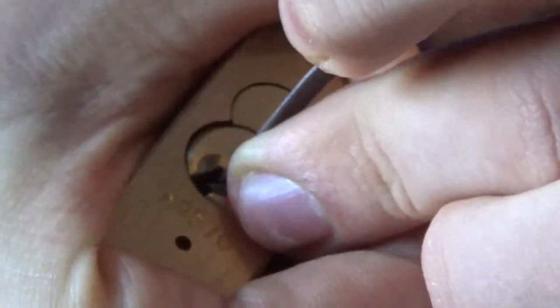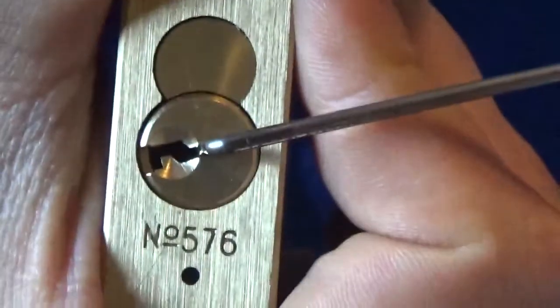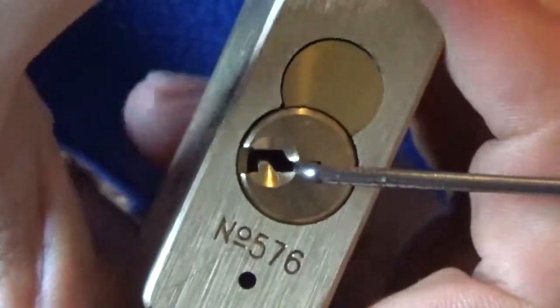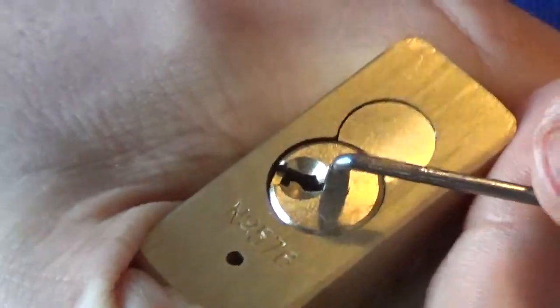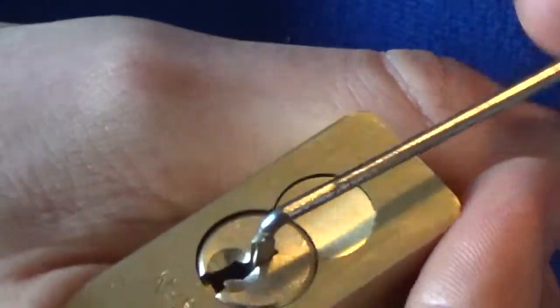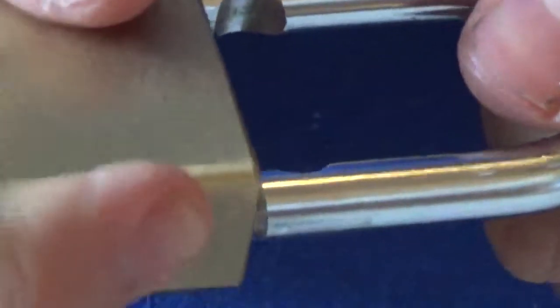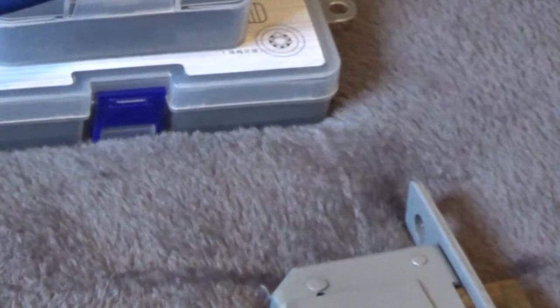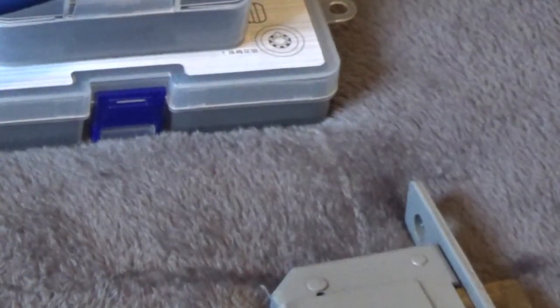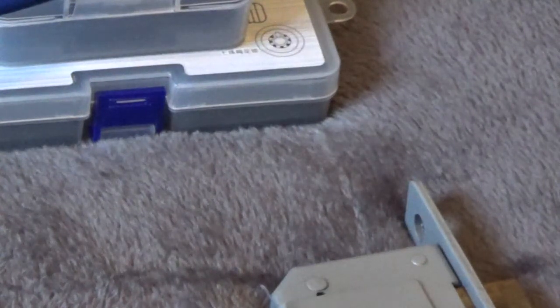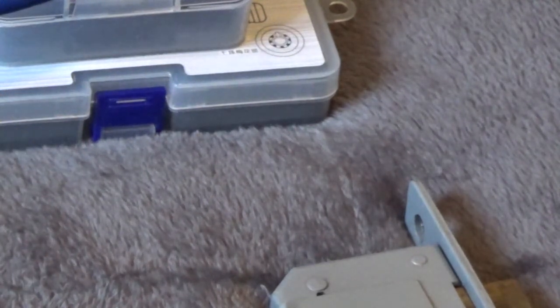I released tension and the pin that I overset fell down and now Mr. Master is open. I can't gut this but that doesn't matter. We can already guess there are serrations probably and spools. That was a Master. That's the lock part of the video.